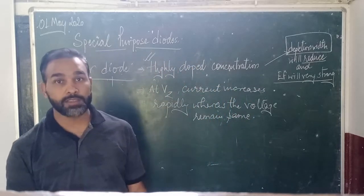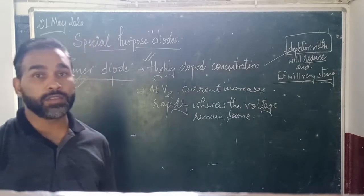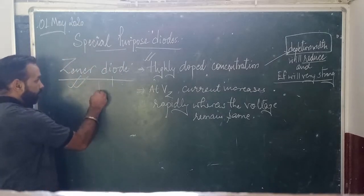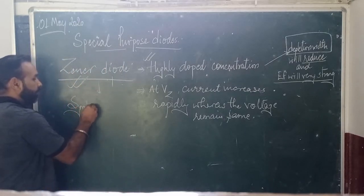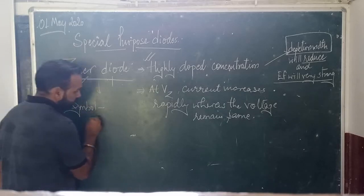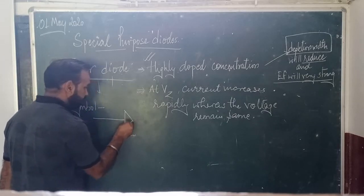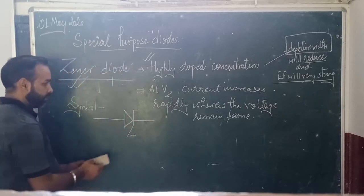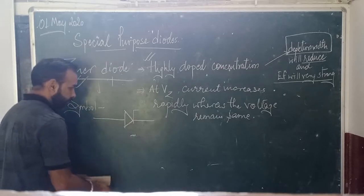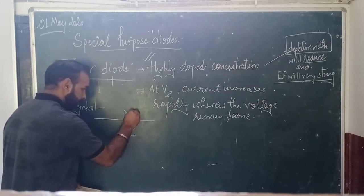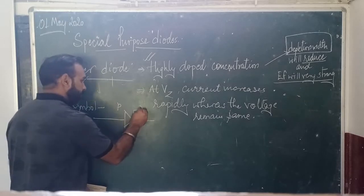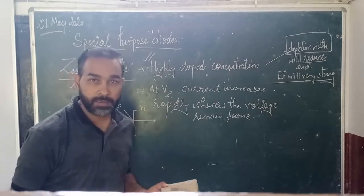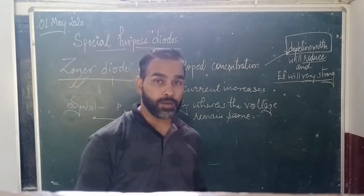So to summarize: at Vz, the current increases rapidly whereas the voltage remains the same. At this constant voltage we get an increase in current — that is the breakdown stage. The symbol for the zener diode is similar to a normal diode but with bent ends on the bar. This side is p and this side is n.